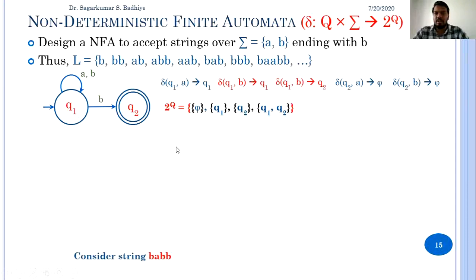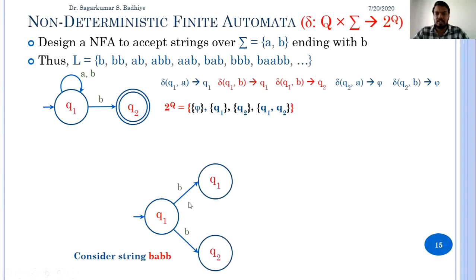Consider the string BABB and check whether it will be accepted by this automata. We start from the initial state. On getting the first B, there are two possible transitions: in q1, getting B means I can go to q1 or I can go to q2. So on getting B in q1, the output can be new state q1 or new state q2.